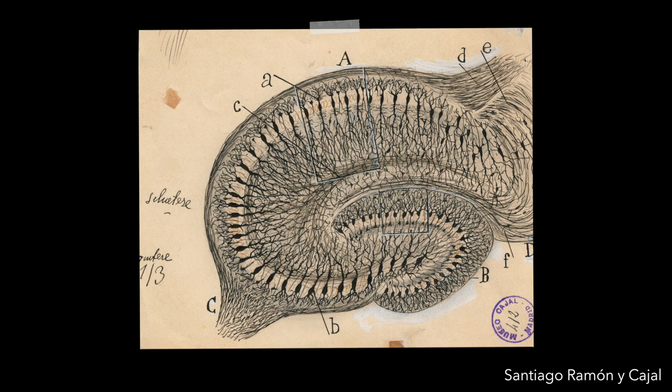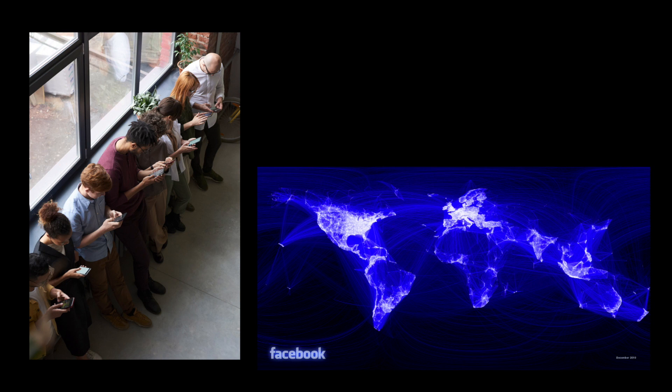And if you look at your brain, it is a giant network of neurons. Neurons send signals to each other, and that's essentially how you think. And of course, you are also embedded in your social network.